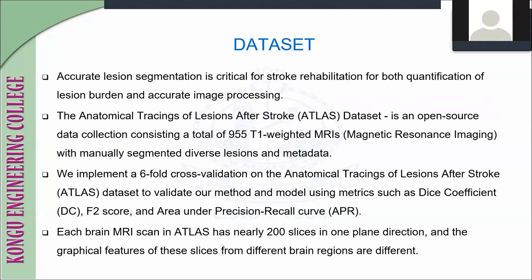Dataset: acute lesion segmentation is critical for stroke rehabilitation, for both quantification of the lesion burden and output processing. We are using the ATLAS dataset — Anatomical Tracings of Lesions After Stroke — which is an open-source data collection. Using MRI (Magnetic Resonance Imaging), we implemented cross-validation on the anatomical tracing of lesions after stroke to validate our methods and metrics.